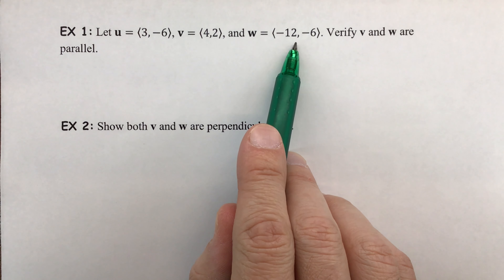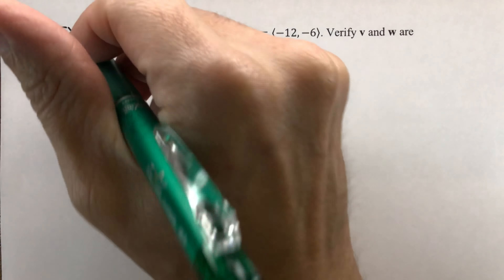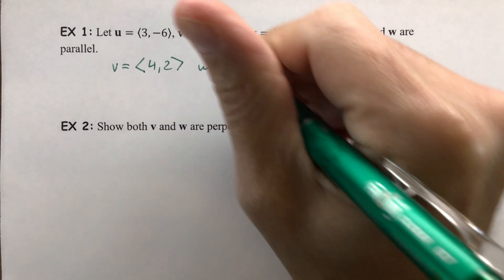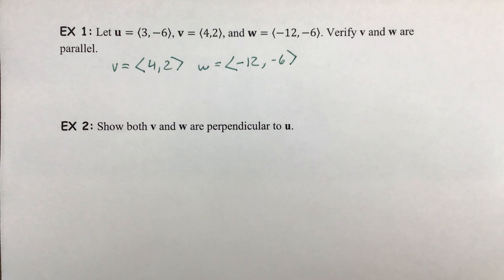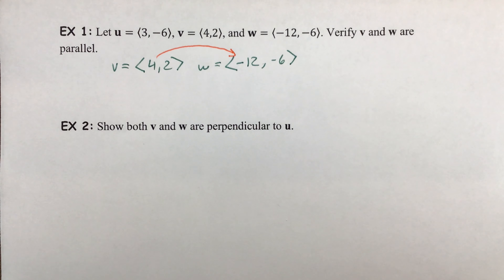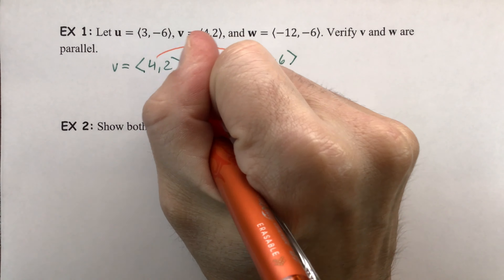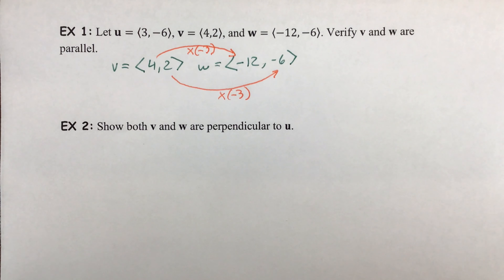For example one, we're given three vectors u, v, and w, and asked to verify that v and w are parallel. Vector v has components (4, 2) and vector w has components (-12, -6). We actually have two different ways to verify this. The first is to look for a scale factor. We look at the x values — 4 and -12 — and see that we can multiply 4 by -3 to get -12. That holds true for the y components: multiply 2 by -3 and also get -6. That means we have a scalar value k, so the two vectors are parallel.